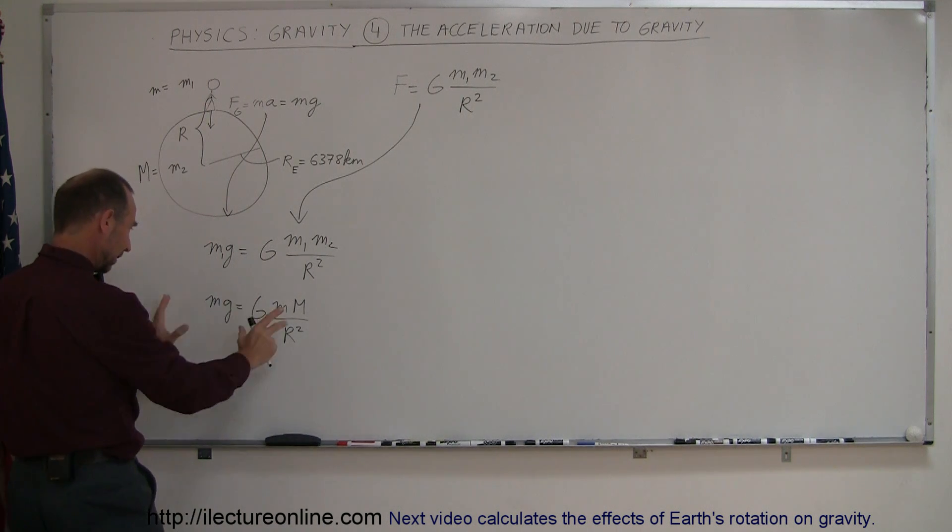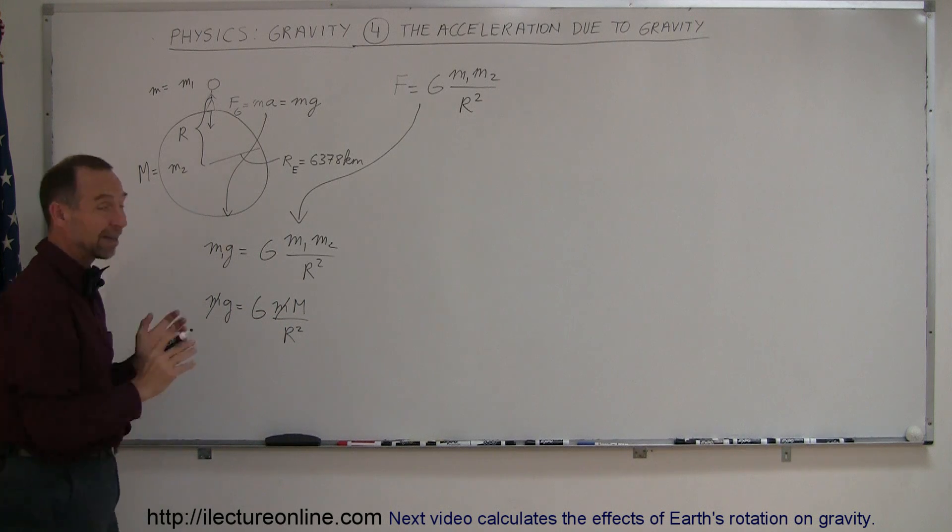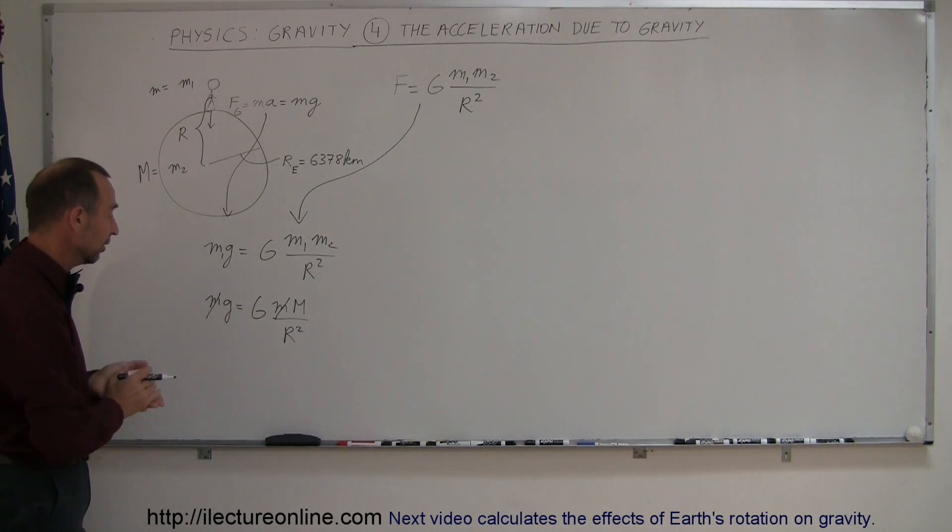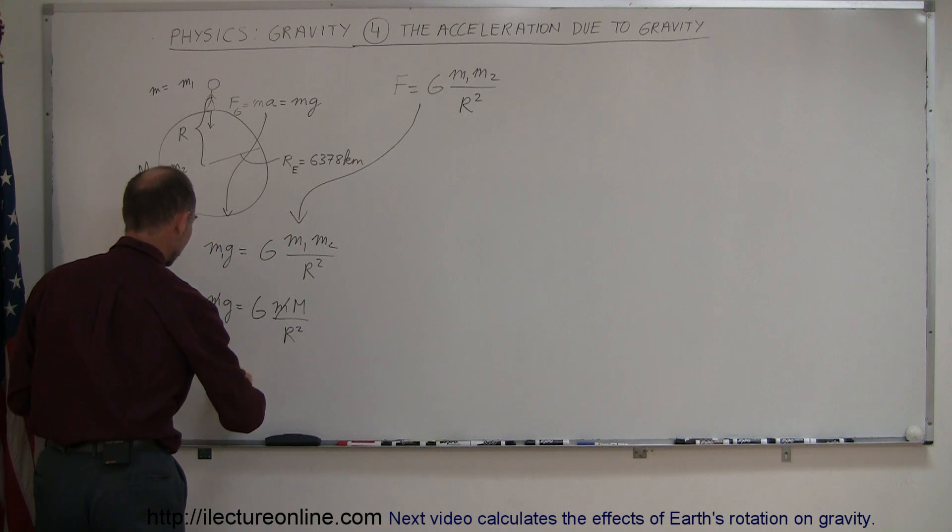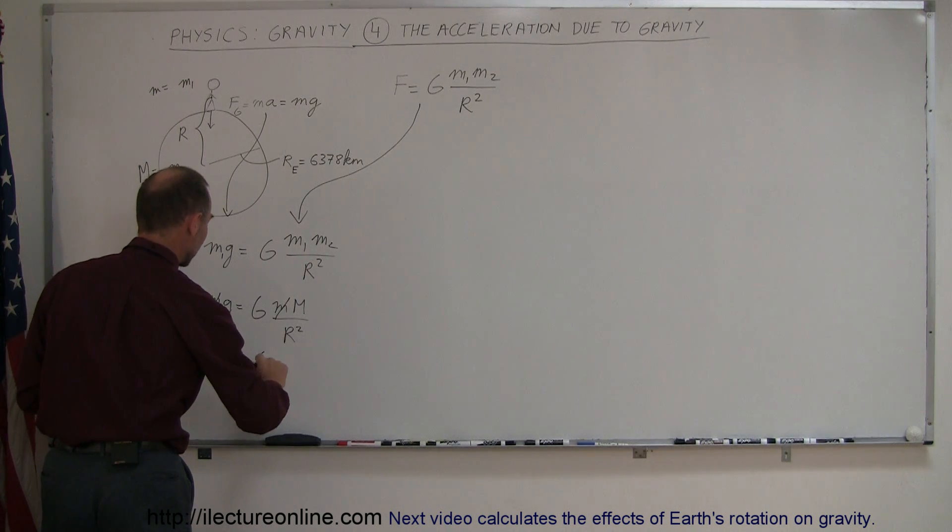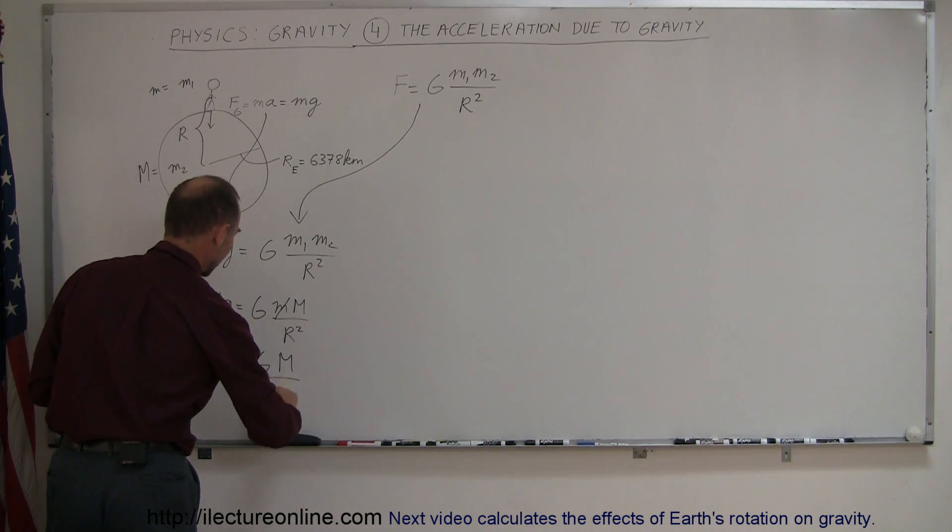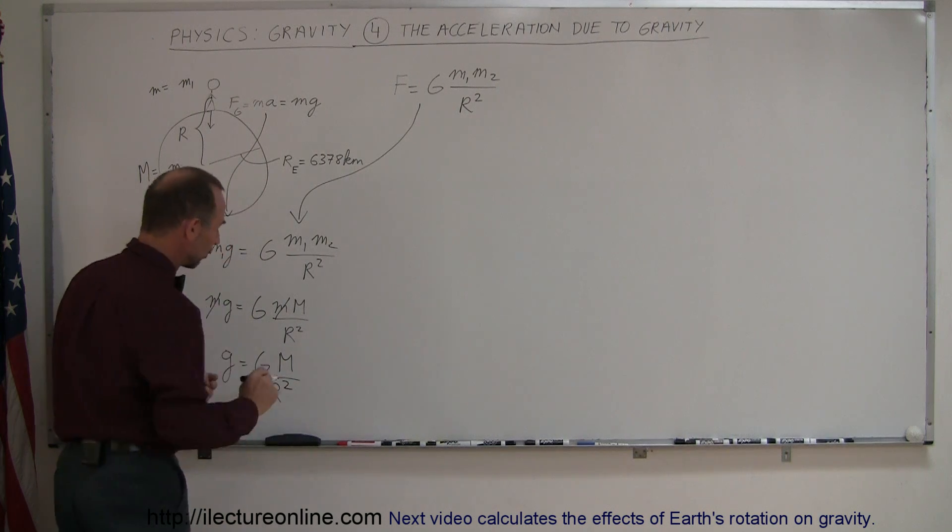Before we do anything else, let's take a look at this equation. We have a small m here and a small m there, so the mass of the person or the object is not relevant here. We can then see that g, the acceleration due to gravity, is simply equal to big G, the mass of the earth, divided by the distance to the center of the earth squared.